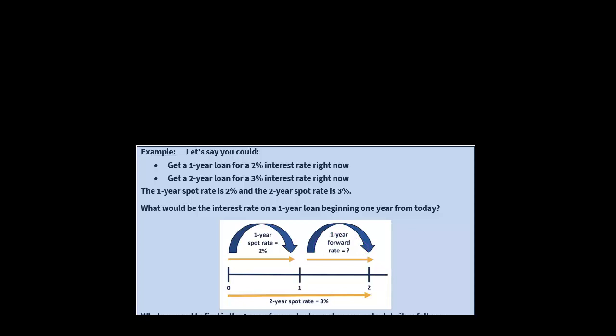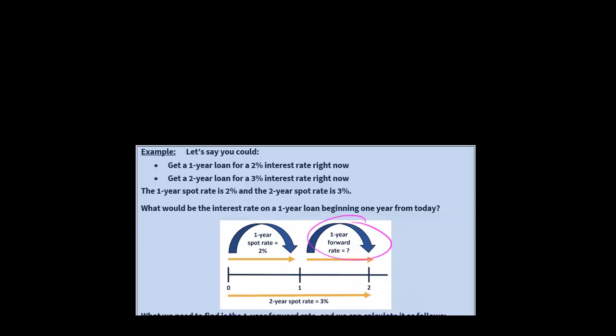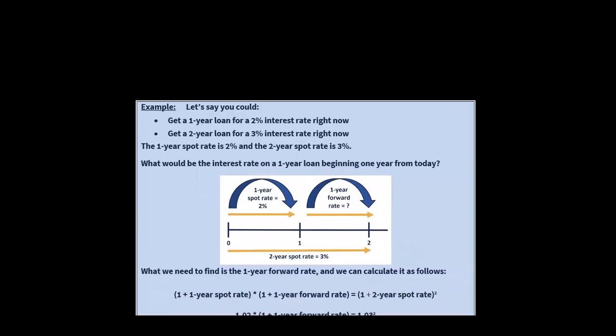What we're going to do is take (1 + the one-year spot rate) and multiply it by (1 + the forward rate), which is unknown and we're going to solve for it. That product will be equal to (1 + the two-year spot rate) squared — so (1 + 0.02) × (1 + f) = (1 + 0.03)². We're just going to solve for the one-year forward rate.